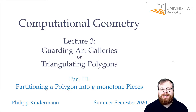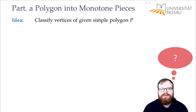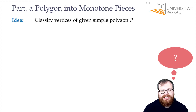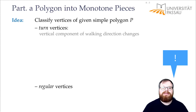In this part, we want to find out how to partition a polygon into y-monotone pieces. To do that, we first want to classify the vertices that we have in a simple polygon. What kind of vertices are important? What kind of vertices can destroy the property that a polygon is y-monotone? We want to classify them into two types: the regular vertices and the turn vertices. The turn vertices are the important ones. A vertex is a turn vertex if the vertical component of the walking direction changes.